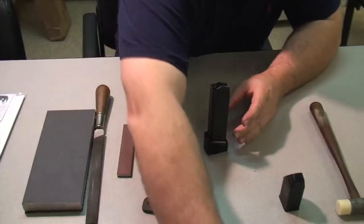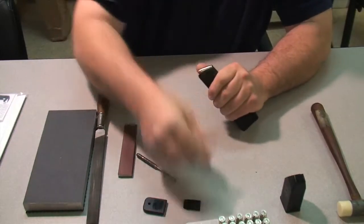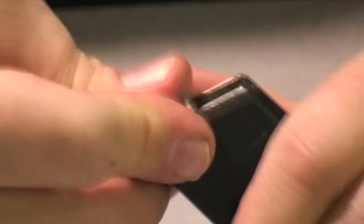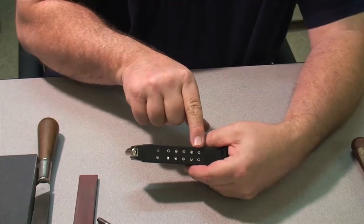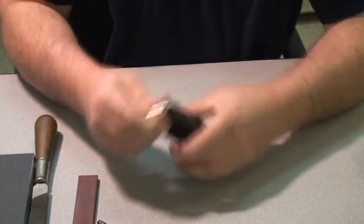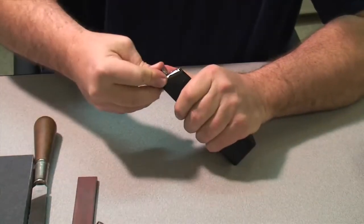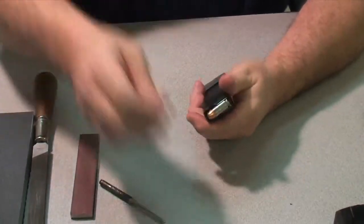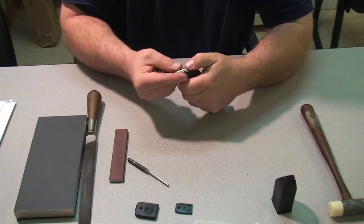Now we're going to load this one to capacity and see just how many rounds we can get in here. One, two, three, four, five, six, seven, eight, nine, ten, eleven, twelve, thirteen, fourteen. Fourteen window is showing a cartridge and fifteen takes it to the standard capacity. We're going to go ahead and load sixteen, seventeen, eighteen. It's getting real tight. So this follower is now tending to hang up on the transition area between the tube and the follower. We're going to prep that follower real quick.